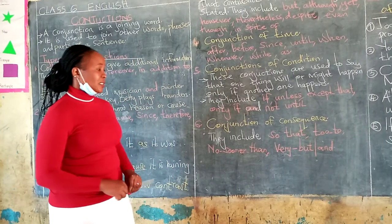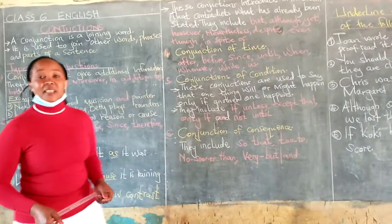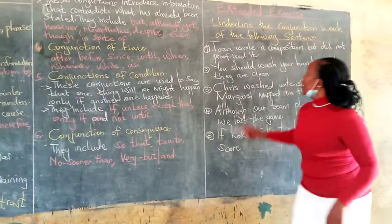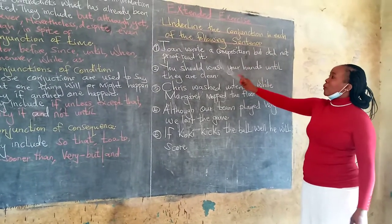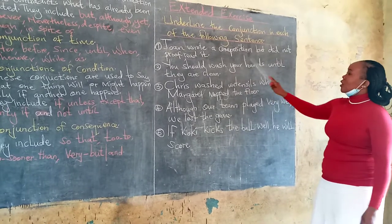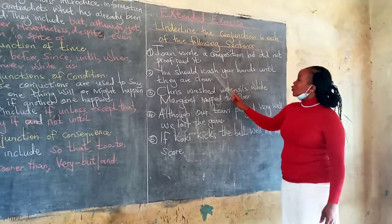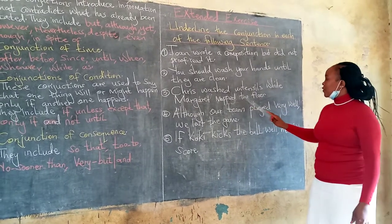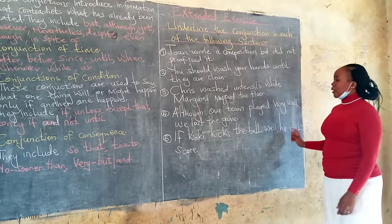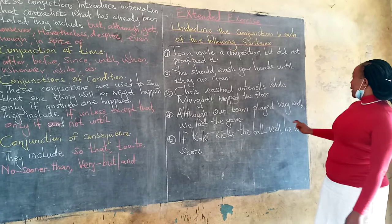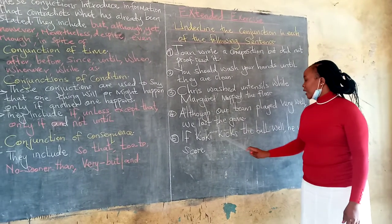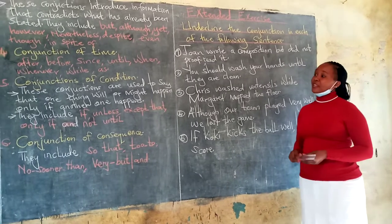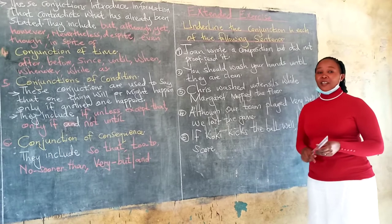So those are the conjunctions we have seen today. There are six of them. And Nana, remember that a conjunction is a joining word. I would like you to do this extended exercise — identify the conjunction in each of the following sentences. Number one: Joan wrote a composition but did not proofread it. Number two: You should wash your hands until they are clean. Number three: Chris washed utensils while Margaret mopped the floor. Number four: Although our team played very well, we lost the game. Number five: If Cookie kicks the ball well, he will score. So in those five sentences, you are identifying the conjunction. Remember, a conjunction is a joining word. Until next lesson, bye-bye.